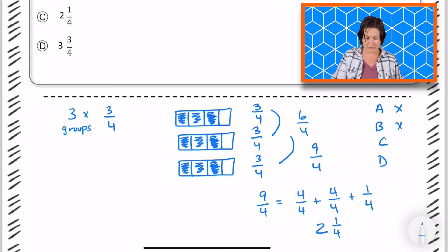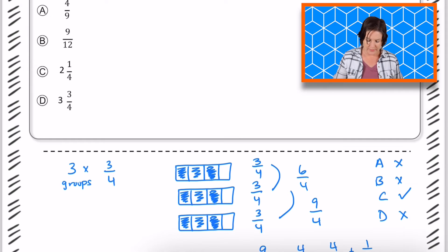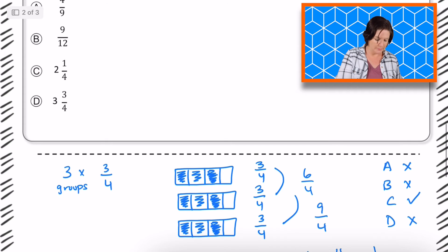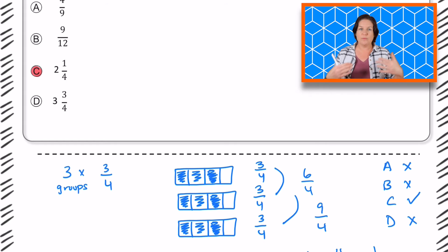So it would not be 3 and 3/4, which is D. It would be C. Okay, so that is one way to do it. I'm going to go ahead and lock in my answer there. That is modeling with a drawing and using repeated addition to solve and also decomposing that number.